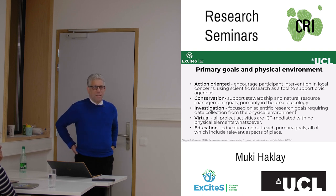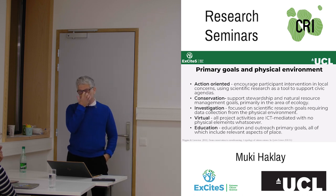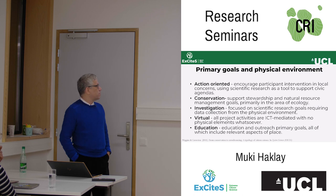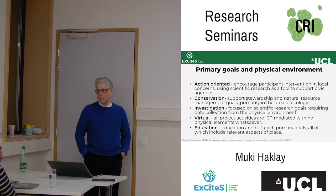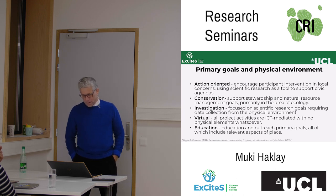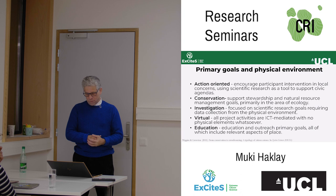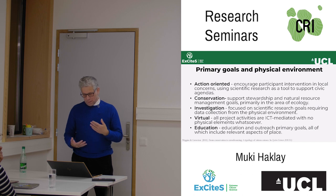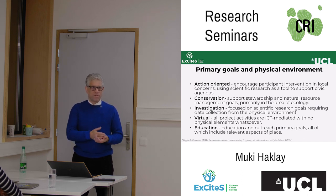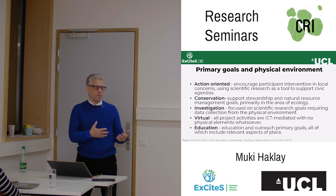One of the early typologies of citizen science came in 2011 from Andrea Wiggins, who was doing this as part of her PhD. She looked at different systems, trying to make sense of what she was seeing in this area. She took a lot of projects, created some analysis, and tried to organize it. She came up with goals and aspects relating to physical or digital environments. She talks about action-oriented projects, where participants are dealing with their specific concern — often different issues in local agendas, like environmental issues or concern about pollution.